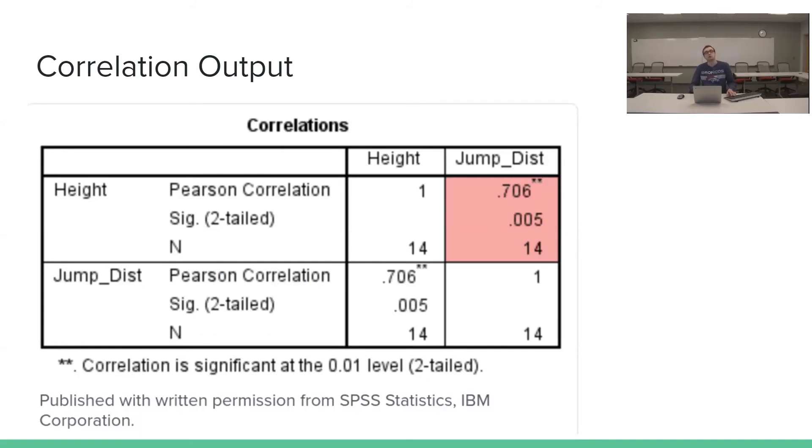Next up, we're going to look at a correlation output. So this is what SPSS actually shows us, our statistical program, when you look at the correlation between two different things. So here you can see that we have a significant correlation because this alpha level is below 0.05 and that's something we're going to get into a little bit later. And also you can see we're above 0.7 between jumping distance and height. So if you're taller and have longer legs, you can jump further. Makes sense.